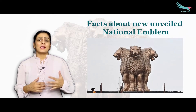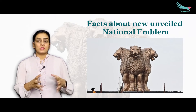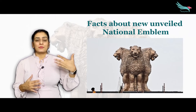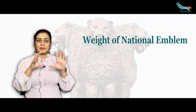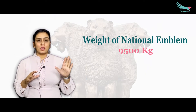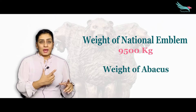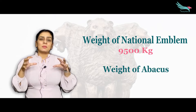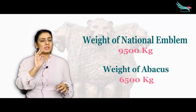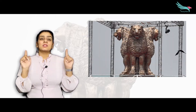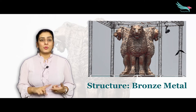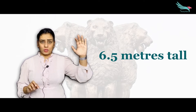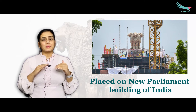Here are some facts about the newly unveiled national emblem. The emblem weighs 9,500 kilograms, and the abacus placed beneath it weighs 6,500 kilograms. The entire structure is made of bronze metal, stands 6.5 meters tall, and has been placed on the roof of the new Parliament building, which is being constructed under the Central Vista programme, signifying Atmanirbhar Bharat.